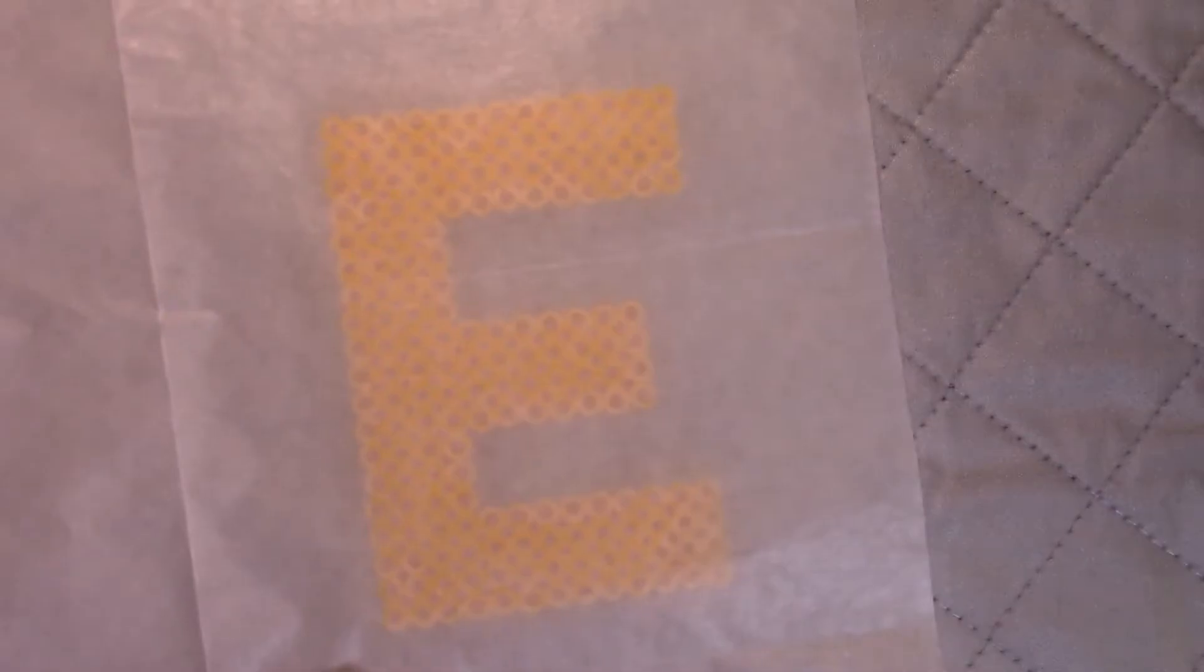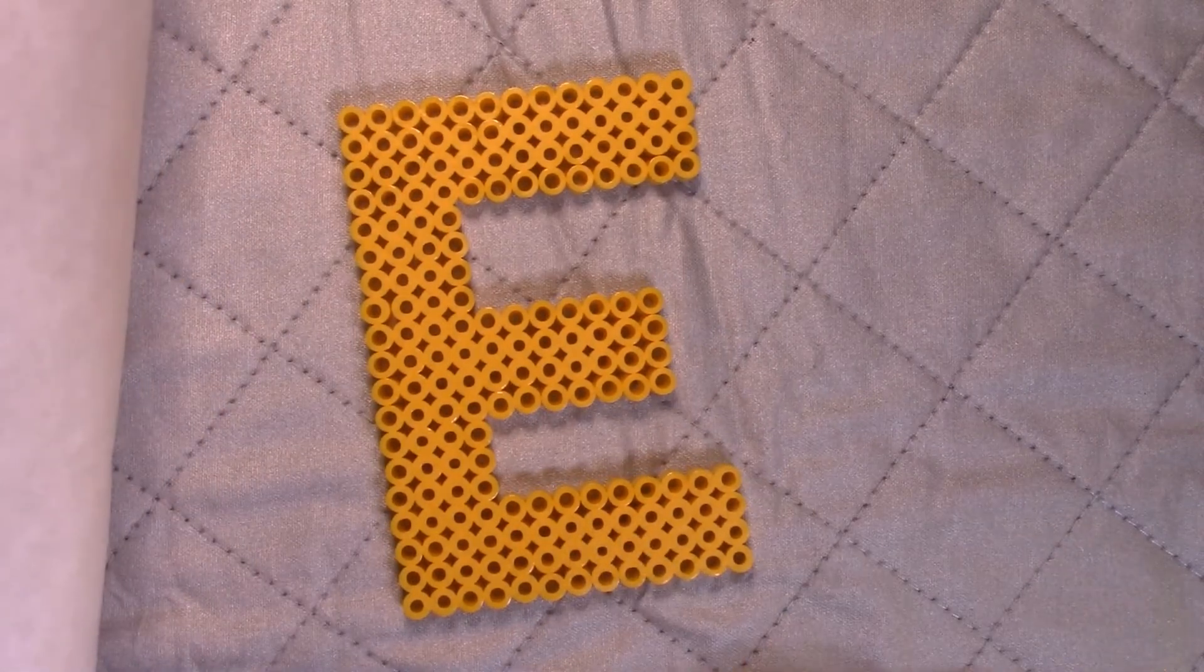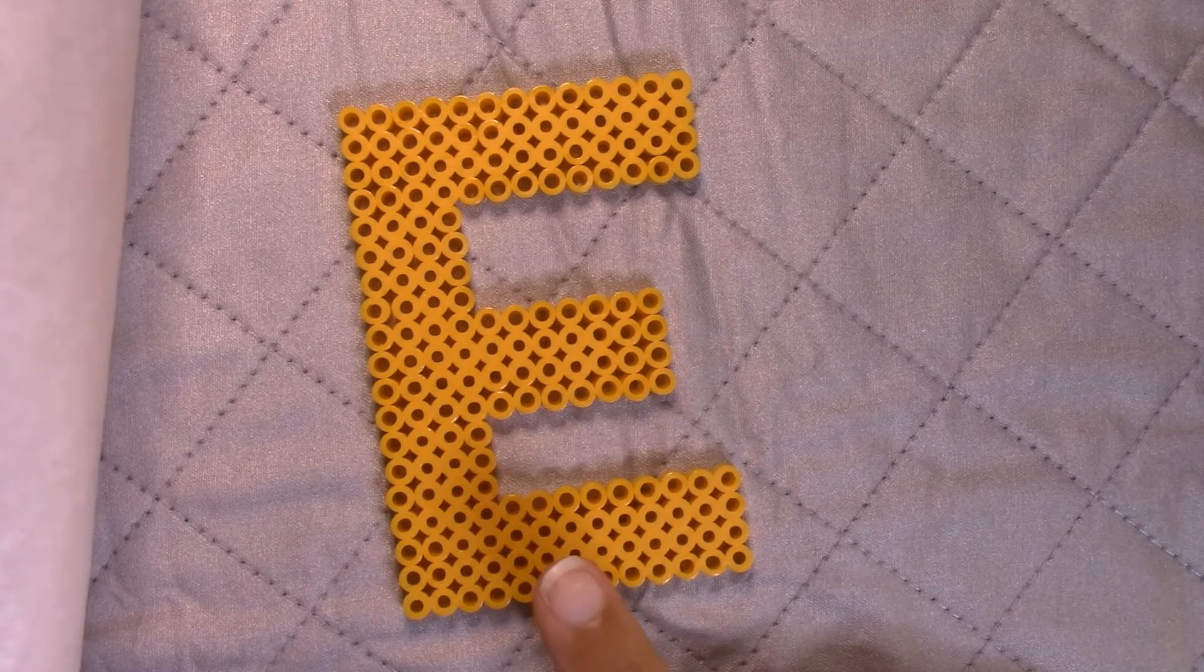In about 15 to 20 seconds of ironing, you'll be able to go ahead and peel up your paper and the back side will be fused together as well. Be careful when touching it because it's still going to be warm or hot.